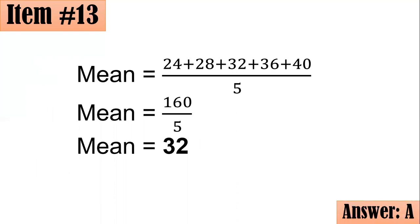Alternatively, you can see that 24, 28, 32, 36, 40 are terms of an arithmetic sequence. If there are an odd number of terms, the middle term is always the arithmetic mean. So here, 32 is the middle term, confirming it is also the mean.